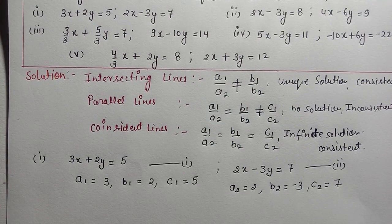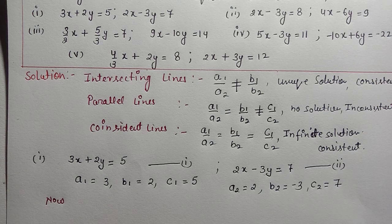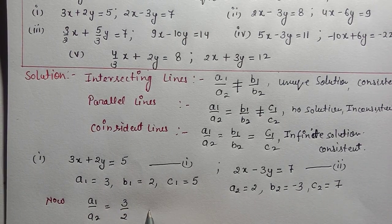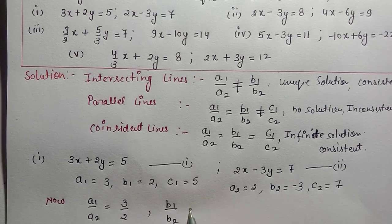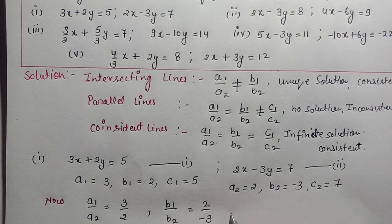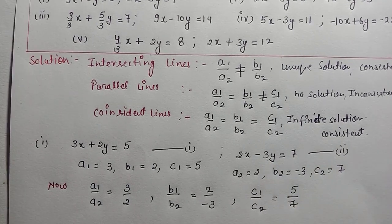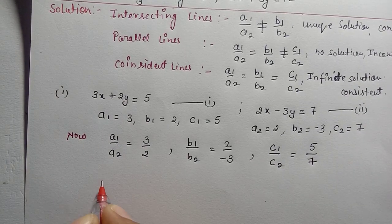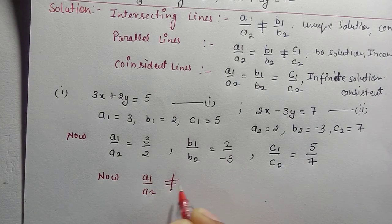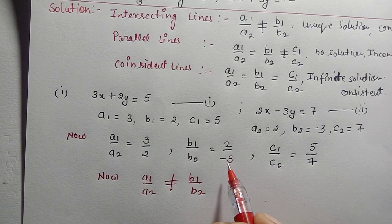Now we have the coefficients; we will find the ratios. A1/A2 = 3/2. B1/B2 = 2/(-3). C1/C2 = 5/7. Now, A1/A2 is not equal to B1/B2 — that is, 3/2 is not equal to 2/(-3), so both are not equal.